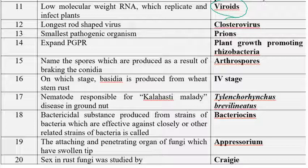The longest rod-shaped virus is closterovirus. The smallest pathogenic organism — actually it is not an organism but an infectious protein — that is prions. Prions are infectious proteins that have the capability to transmit their infectious nature to uninfected proteins as well.